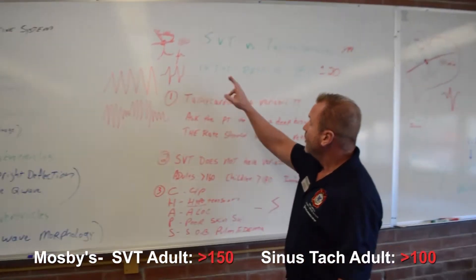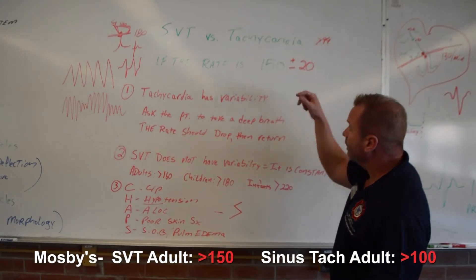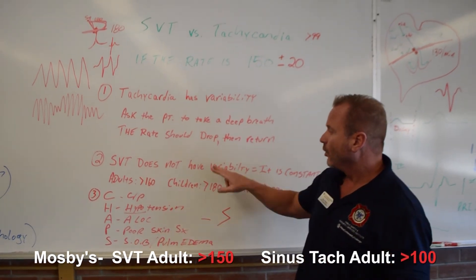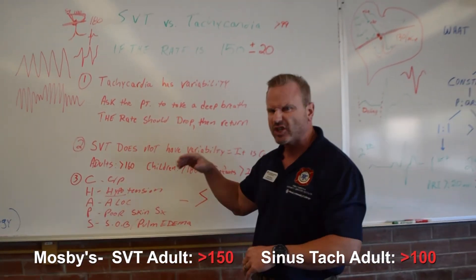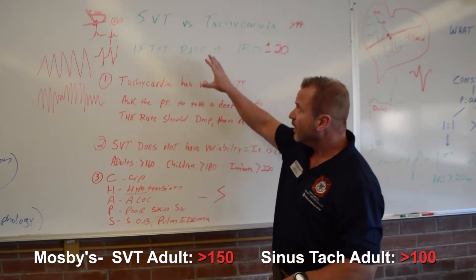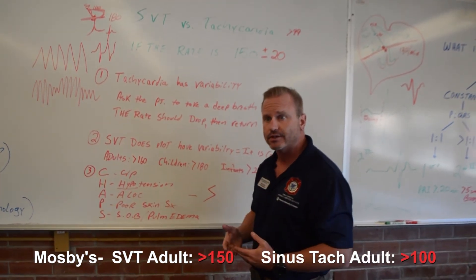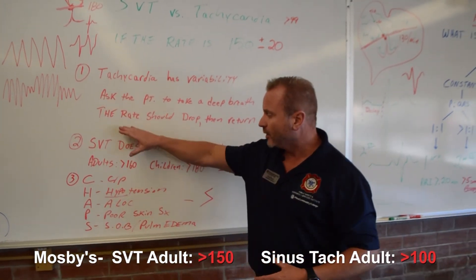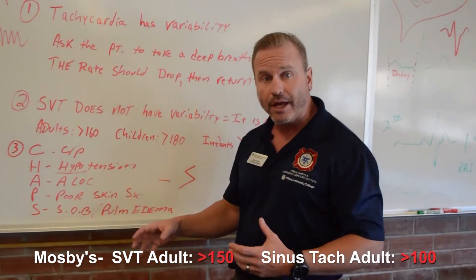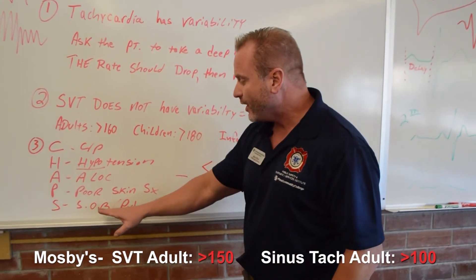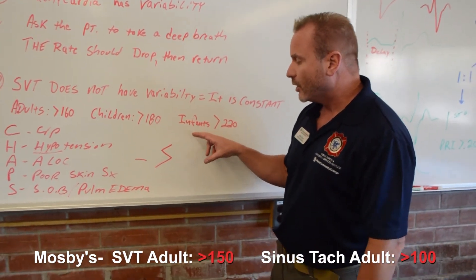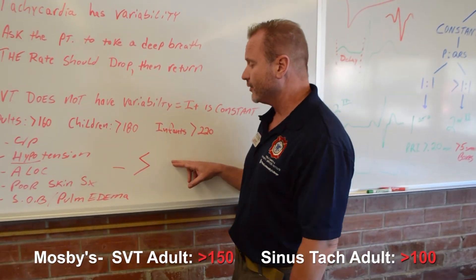So to wrap up SVT versus sinus tachycardia: sinus tachycardia has variability — the rate changes when the patient takes a deep breath. SVT does not have variability; the rate is constant at 160, 160, 160. Stable versus unstable, or symptomatic versus non-symptomatic: you can have a stable SVT or a symptomatic SVT. Signs of symptomatic include chest pain, hypotension, altered mental status, poor skin signs — pale, cool, diaphoretic — or shortness of breath leading to pulmonary edema. That determines whether we give medications or cardiovert the patient.